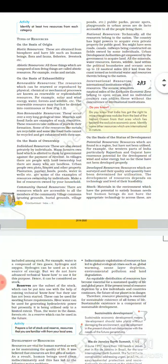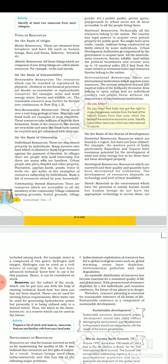Ab aate hain on the basis of status of development, yani ki vikas ki astar ke aadhar par. To sambhavi sanshadhan pehle kya hote hain, yani ki potential resources — ye woh sanshadhan hain jo kisi bhi pradesh mein vidyaman hote hain, parantu inka upyog nahi kiya gaya hai. Udaharan ke taur par, Rajasthan aur Gujarat mein pavan aur surya sanshadhanon ki apar sambhavna hai, parantu inka sahi dhang se vikas nahi hua hai.